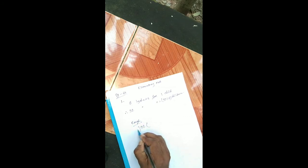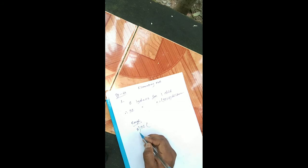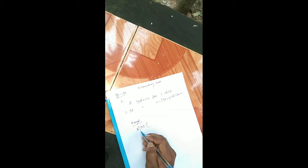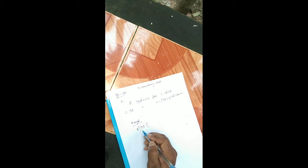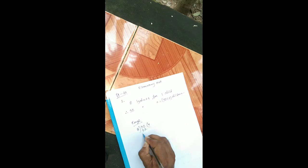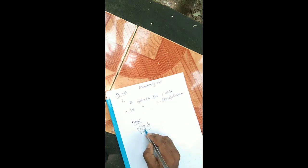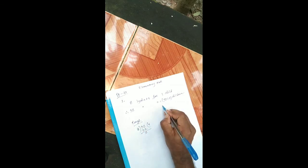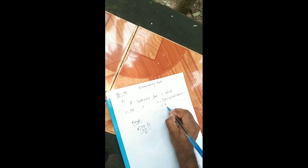32 divided by 8. You already learned the timetable of 8: 8 ones are 8, 8 twos are 16, 8 threes are 24, 8 fours are 32. So 32 minus 32 equals 0 — not a cross sign, be careful. So the answer is 4 children.